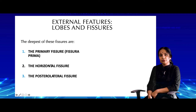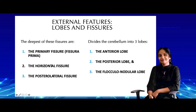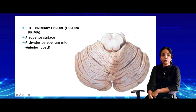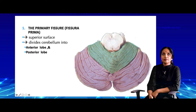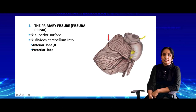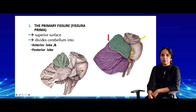These fissures divide the cerebellum into three main lobes: the anterior lobe, the posterior lobe, and the flocculonodular lobe. The primary fissure is seen on the superior surface and divides the cerebellum into the anterior and posterior lobes. In front of the primary fissure is the anterior lobe, and behind it is the posterior lobe. The anterior lobe lies entirely on the superior surface, while the posterior lobe occupies both the superior and inferior surfaces. The green indicates the anterior lobe, and the fissura prima is clearly visible here.